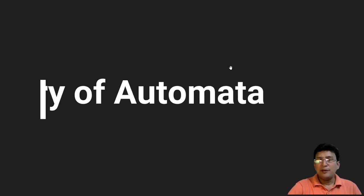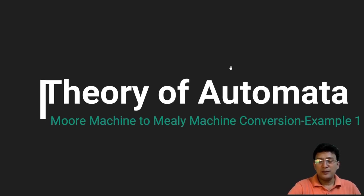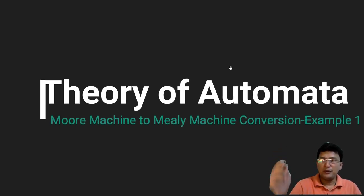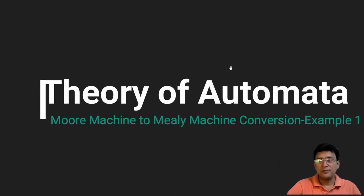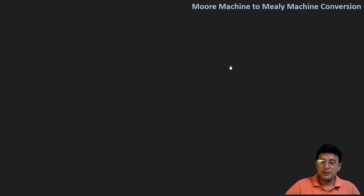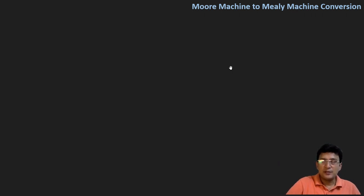Hello everyone. From this lecture, we will learn how to convert the given Moore machine to the Mealy machine. The Moore machine is one in which the output is associated with the states, and the Mealy machine is one in which the output is associated with the transitions.